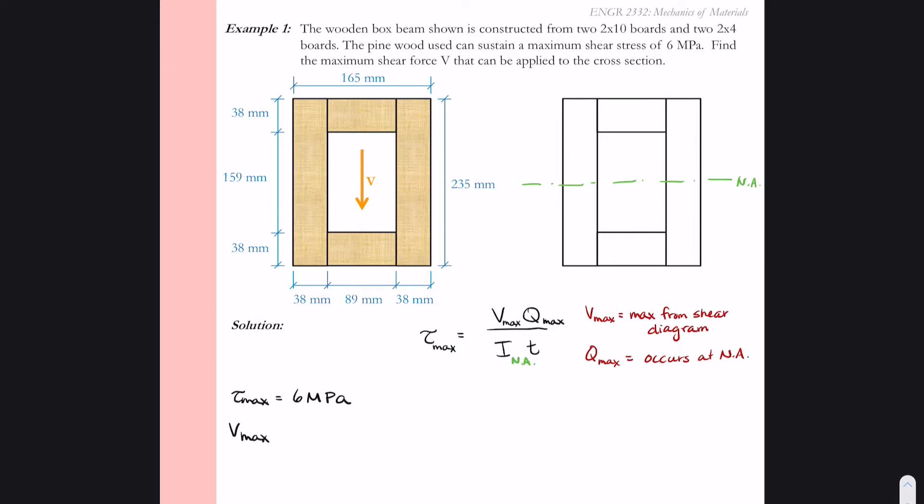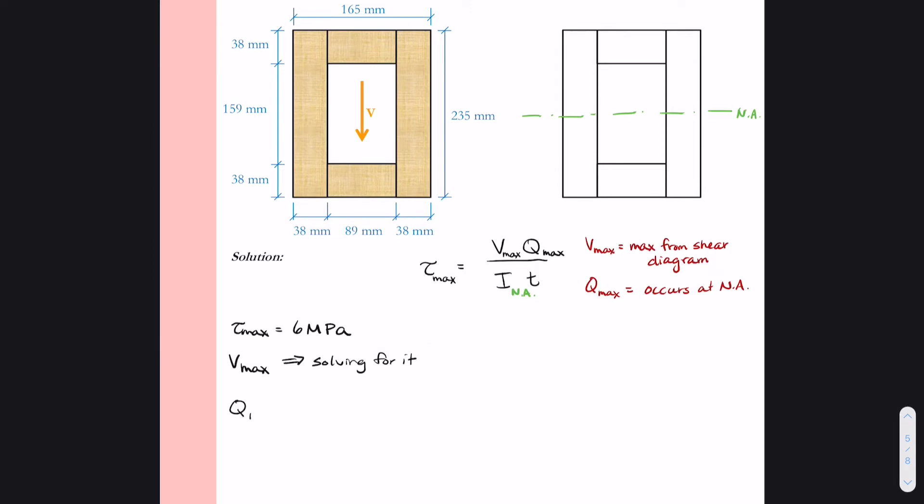So we're just going to go through the variables here. Tau max was 6 megapascals. This was given to us in the problem statement. V max is what we're asked to solve for, so there's no real solving for it quite yet.